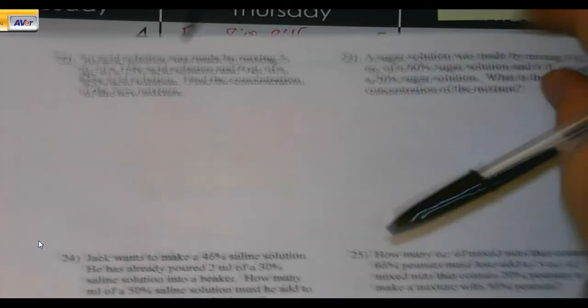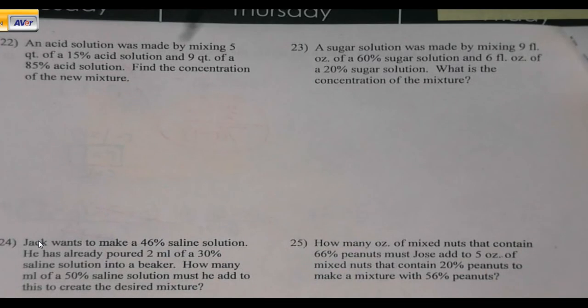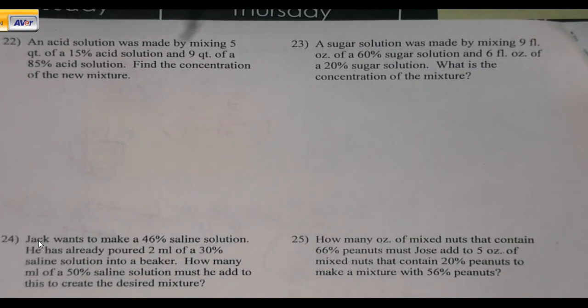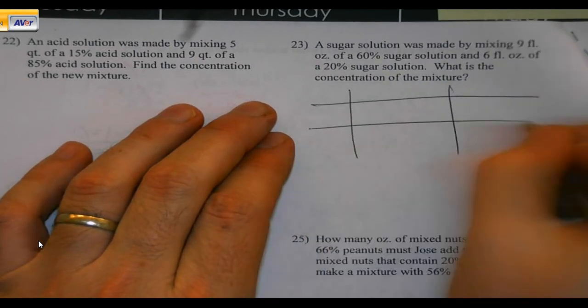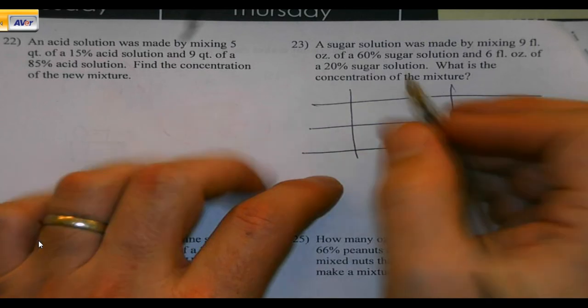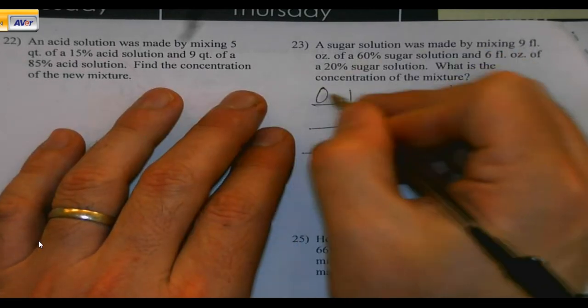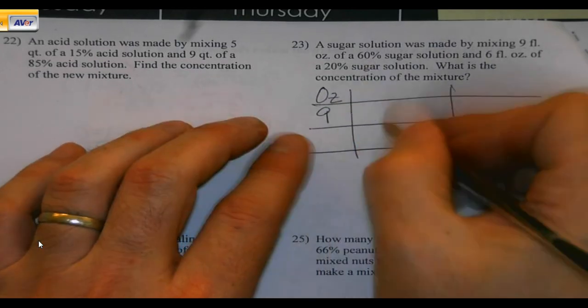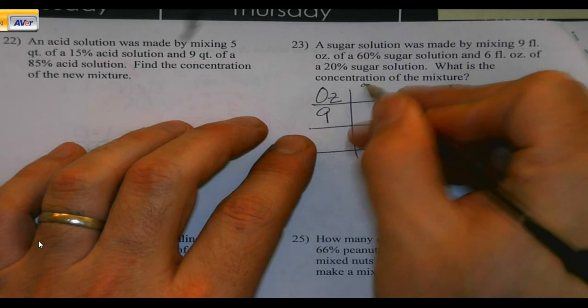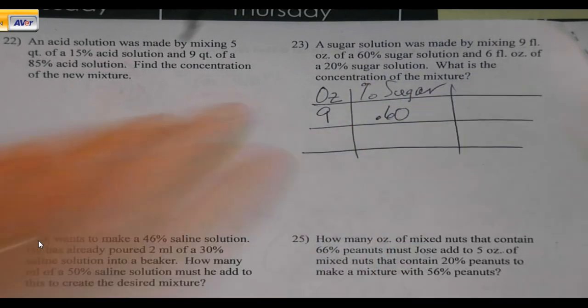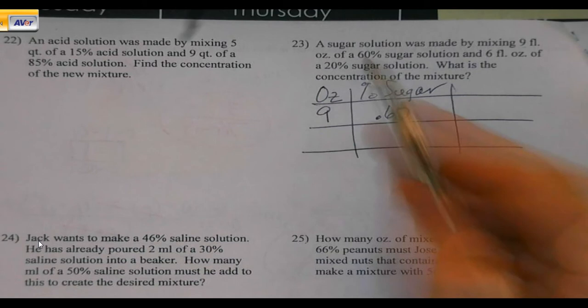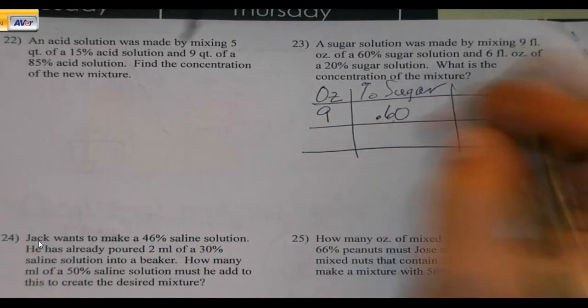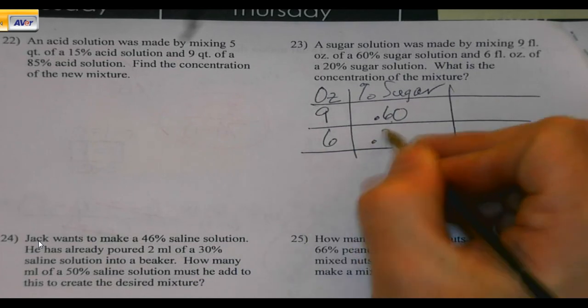We've got the rest of our application problems here on the back. A sugar solution was made by mixing 9 fluid ounces of a 60% sugar solution and 6 fluid ounces of a 20% sugar solution. What is the concentration of the mixture? We have chatted about charts being nice ways for us to do this. We got number of ounces. This first one, we got 9 ounces of 60% sugar solution. And that your percentage is a decimal.